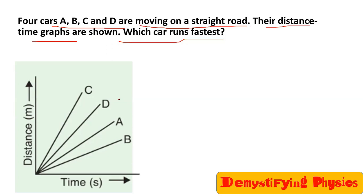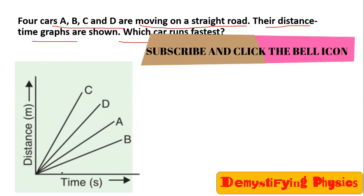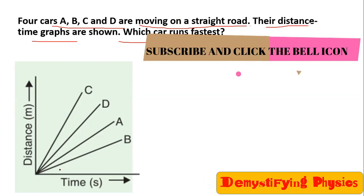Now which has maximum speed, how do we know that? We know that in a distance-time graph, slope gives you the speed. The greater the slope, the greater the speed.